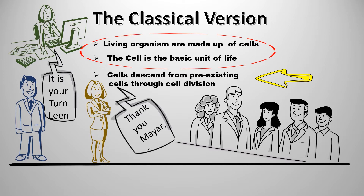Hooke meant to say that they looked like cells or rooms in monasteries. He used a simple light microscope with a magnification of 30X to examine his specimen. However, the discovery of the microscope led to the evolution of the classical cell theory.